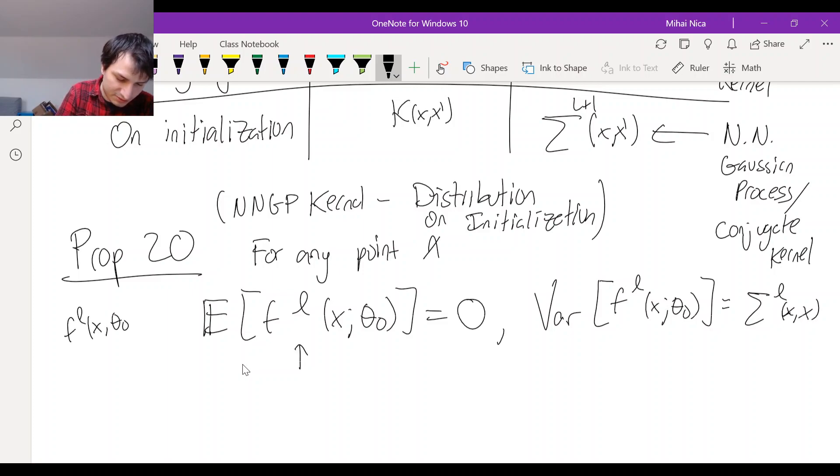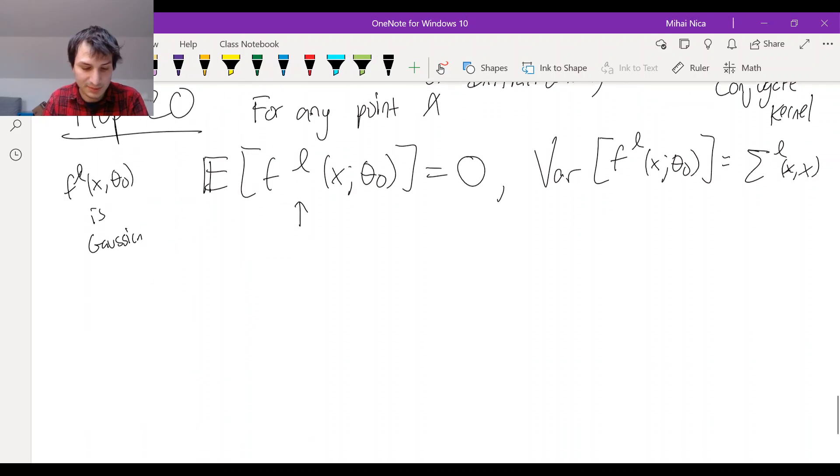So this is the same kind of statement as we had before for initialization of the feature regression model. And now it's true for the neural network. And there is an explicit formula for sigma L. And sigma L evolves like this.